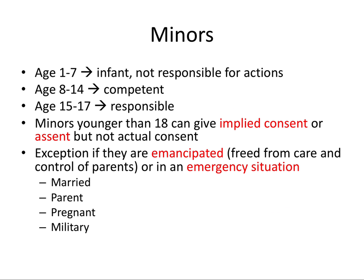In law, a minor is someone under a certain age, usually 18. Age 18 is the typical age of majority at which a person can give legal consent. From age 1 to 7, they're considered by law an infant — not responsible for actions. Age 8 to 14, they're considered competent. Age 15 to 17, responsible. Once they hit 18, they are a major. Minors younger than 18 can give implied consent, which is an informal agreement, or assent, which is the formal agreement of someone not able to give legal consent — but they cannot provide actual informed consent.